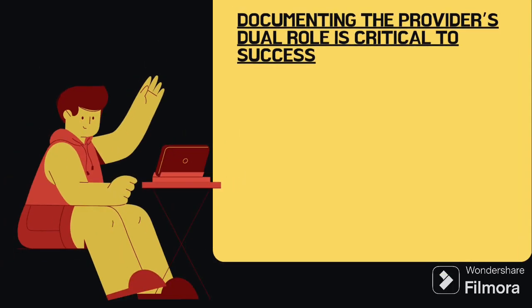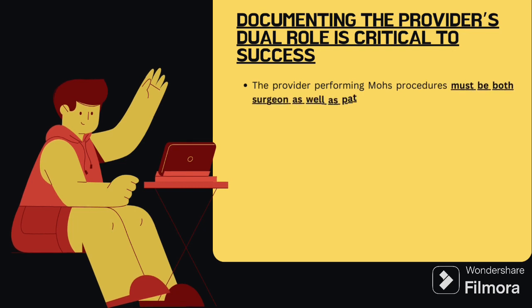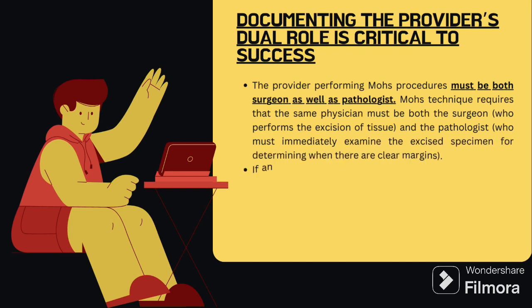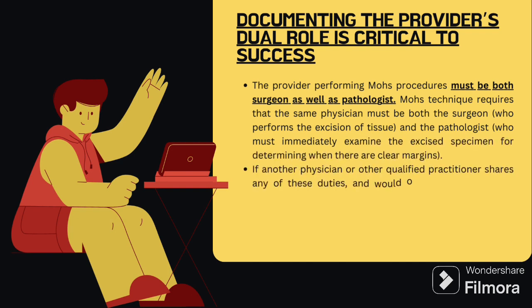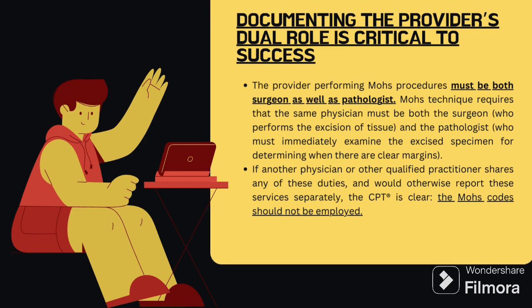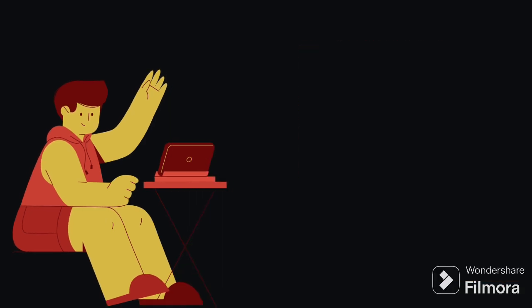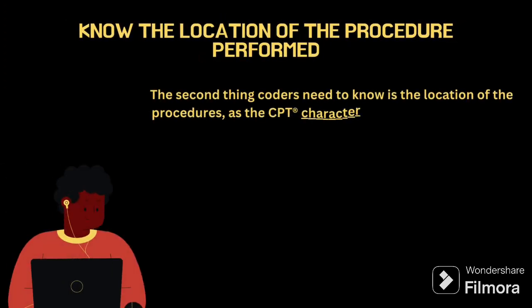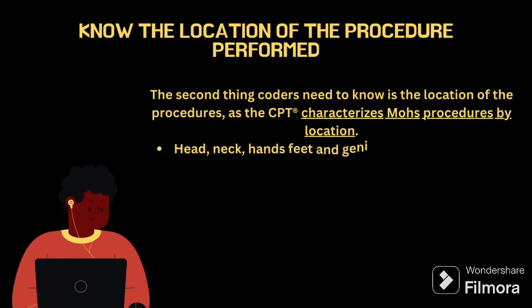For documenting the provider's dual role, you have to check very clearly: the doctor who is doing this Mohs surgery must be the surgeon as well as the pathologist. Then only you can assign the Mohs surgery code. If two doctors are doing it separately, then the Mohs surgery code should not be given — the pathology code should be coded separately and the 10,000 series separately. Only if it is done by the same doctor do you assign the Mohs surgery code.